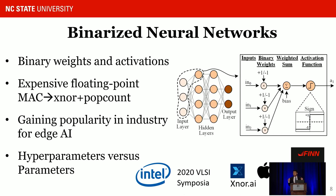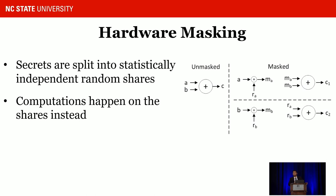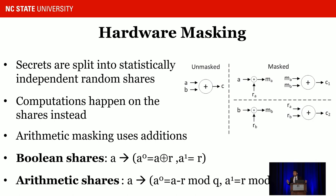The second technique we use is hardware masking. Instead of using the actual secret on hardware, we split the secret into two statistically independent shares, which breaks the correlation between the secret value and the power traces. If we do it on bits, it's called Boolean masking; if on larger composite numbers with multiple bits, it's arithmetic masking. We need both in our design because we have both arithmetic and Boolean operations inside a neural network.